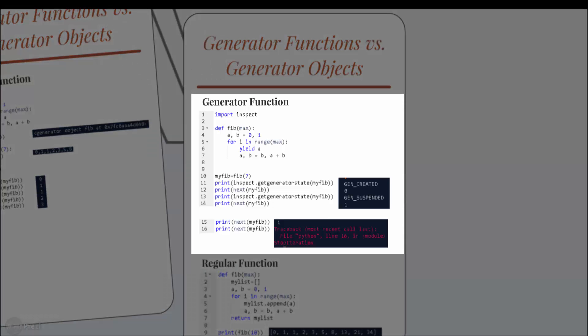You can also check the current state of a generator. The inspect module provides the getGeneratorState() method, which returns the current state of a generator. In this example, the output 'GEN_CREATED' means that the generator has been created and is still waiting to be run for the very first time. Whereas 'GEN_SUSPENDED' means that the generator is currently suspended and waiting for the next call. When a generator is exhausted and reaches its termination condition, a StopIteration exception is thrown by Python, indicating that the generator has no more values.